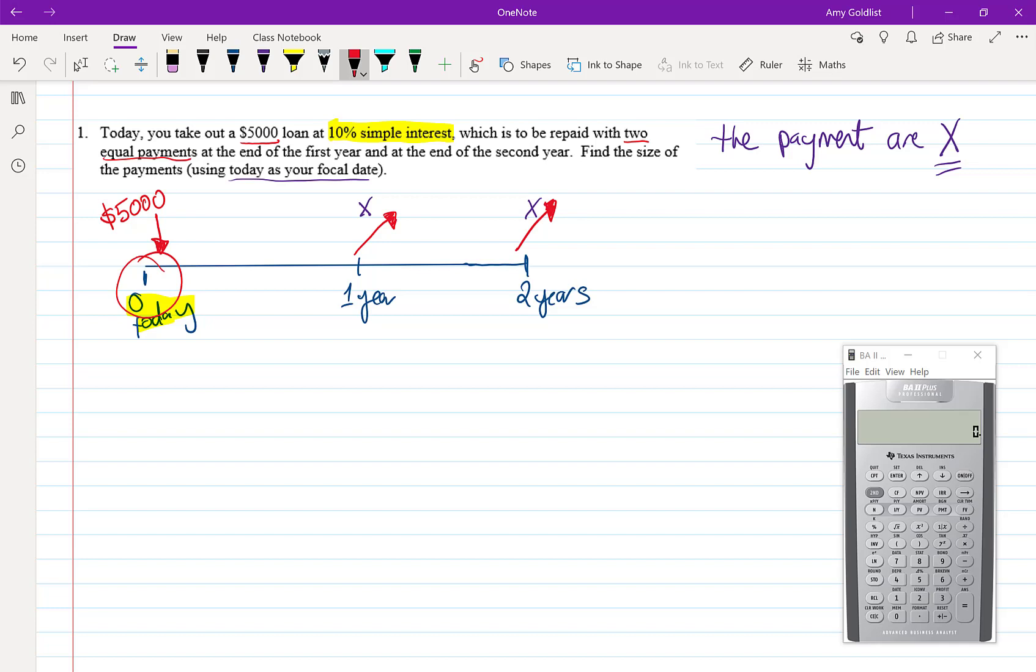Let's move everything to the focal date and then we set this up. So X is the size of the payment and we're gonna set this up as money in equals money out.